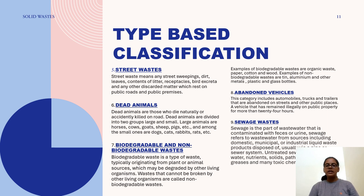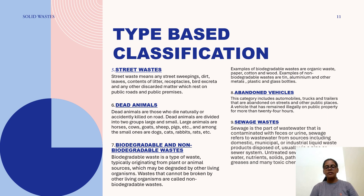Next are dead animals. Dead animals are those who die naturally or are accidentally killed on the road. Dead animals are divided into two groups: small and large. Large animals are horses, cows, goats, sheep, pigs, etc. And small ones are dogs, cats, rabbits, and rats.